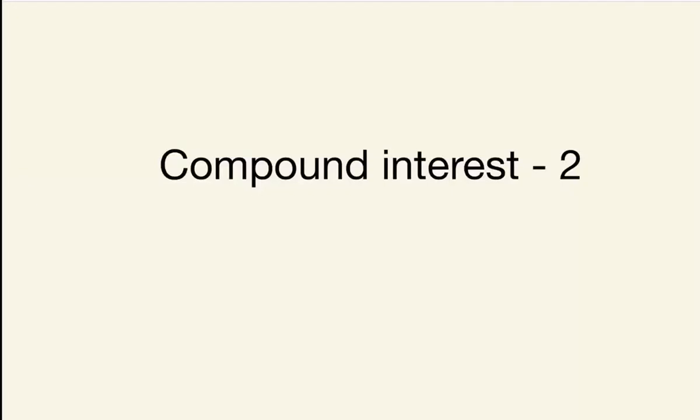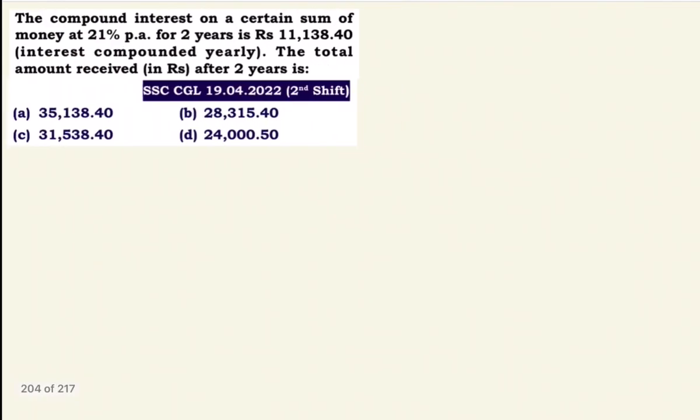Hello everyone, welcome to Chandru Max. So we are learning compound interest. First question: the compound interest on a certain sum of money at 21% per annum for two years is Rs.11,138.40, interest compounded yearly. The total amount in rupees after two years is what we need to find.